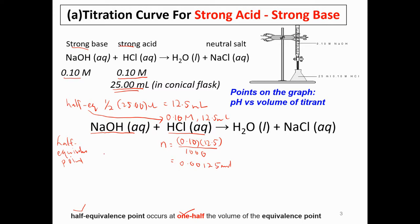For NaOH, it will also equal the same number of moles as hydrochloric acid due to stoichiometry, so this will also be 0.00125 mol. At the half-equivalence point, 12.5 ml of 0.1 molar HCl has reacted, so we also add in 12.5 ml of NaOH and get the same number of moles.